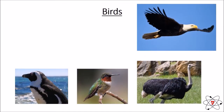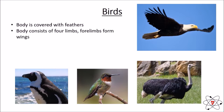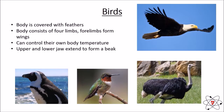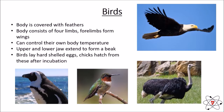Our next class of vertebrates are the birds. Birds have a very obvious and distinct feature: their bodies are covered with feathers. Birds, just like mammals, have four limbs which form their wings, and all birds have got wings. Birds can also control their own body temperature. The upper and lower jaw of a bird extend to form a beak, and all birds have got a beak. Birds lay hard-shelled eggs, and the chicks hatch after incubation. One feature that not all birds have is the ability to fly — penguins and ostriches, for example, are flightless birds, so do not assume that all birds can fly.